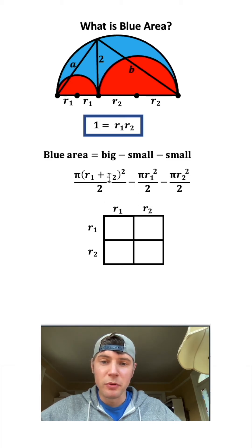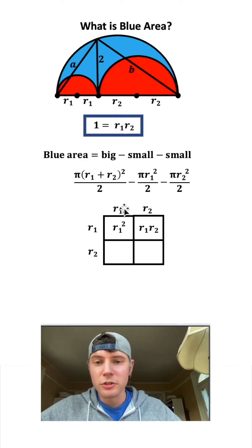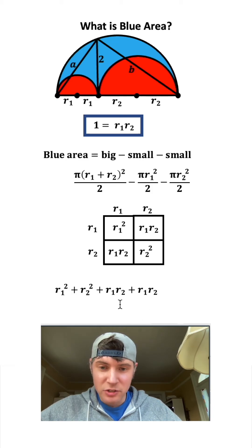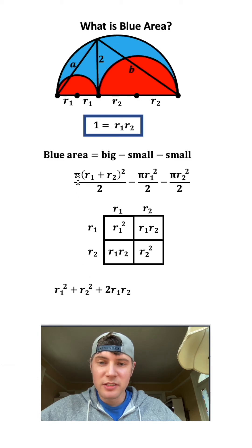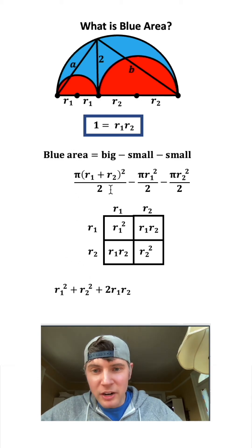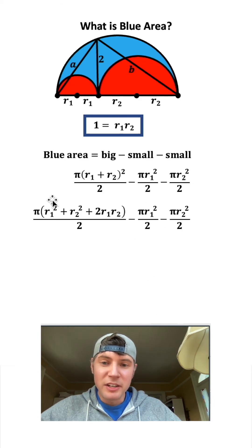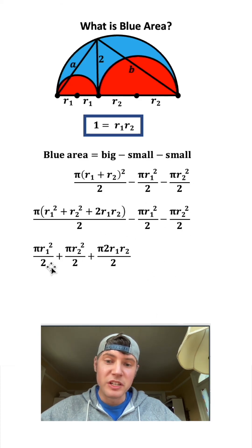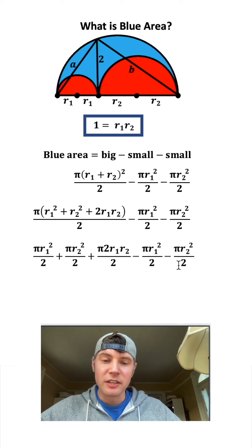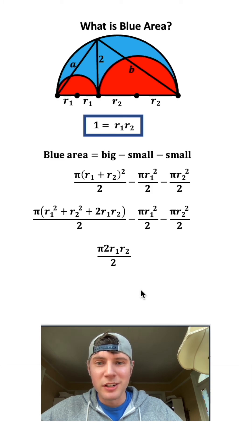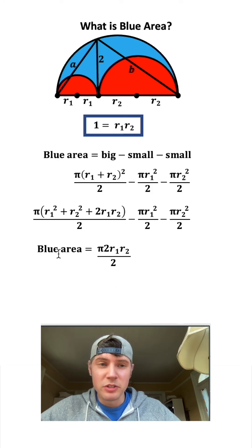We expand the squared term: r₁×r₁=r₁², r₁×r₂=r₁r₂, r₁×r₂=r₁r₂, and r₂×r₂=r₂². Bringing out all four terms, the two cross terms match so we have 2r₁r₂. We still have π/2 out front. Bringing down the two fractions we're subtracting: the r₁² terms match and cancel, and the r₂² terms match and cancel, leaving us with just the middle term. This entire calculation equals the blue area.